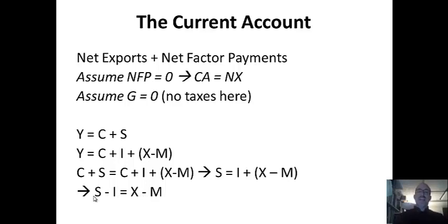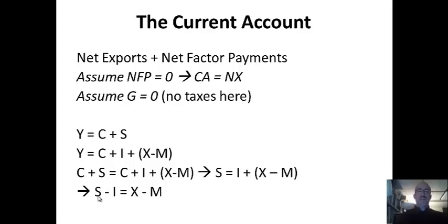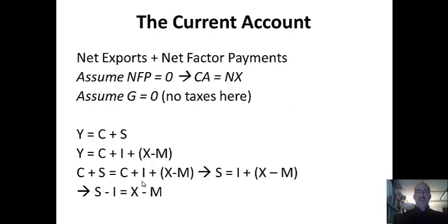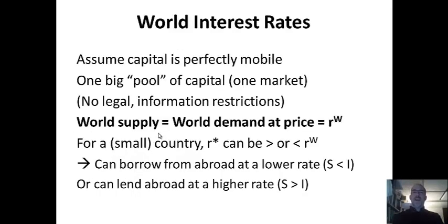A country like Germany has extra savings and sends money abroad — that's also represented by the fact that Germany is a net exporter. They send goods abroad. So in a lending context and in a net exports context, they're equal. Germany sends railroad trains to another country; that country imports the capital through importing the railroad trains. That's one way to look at it.